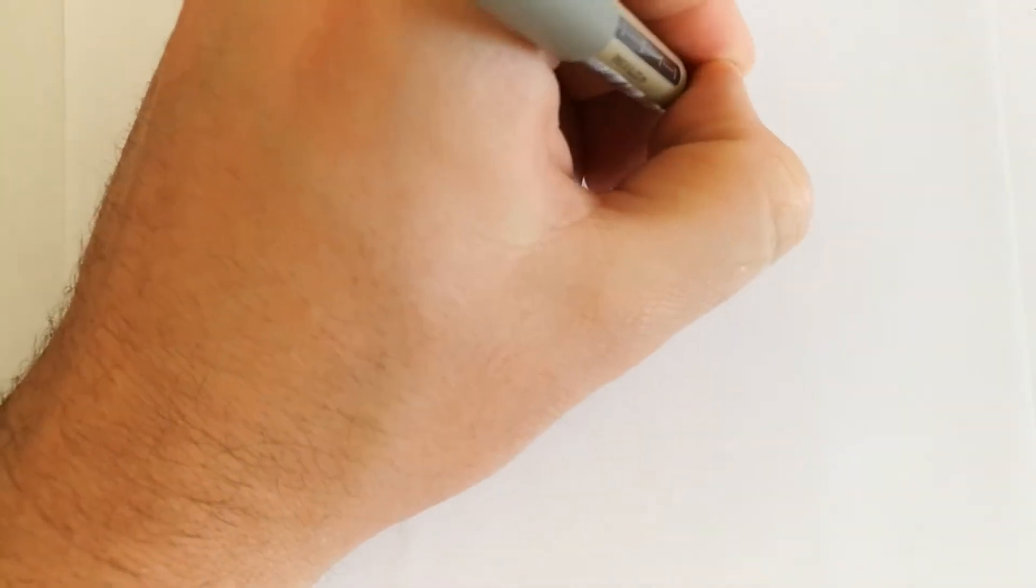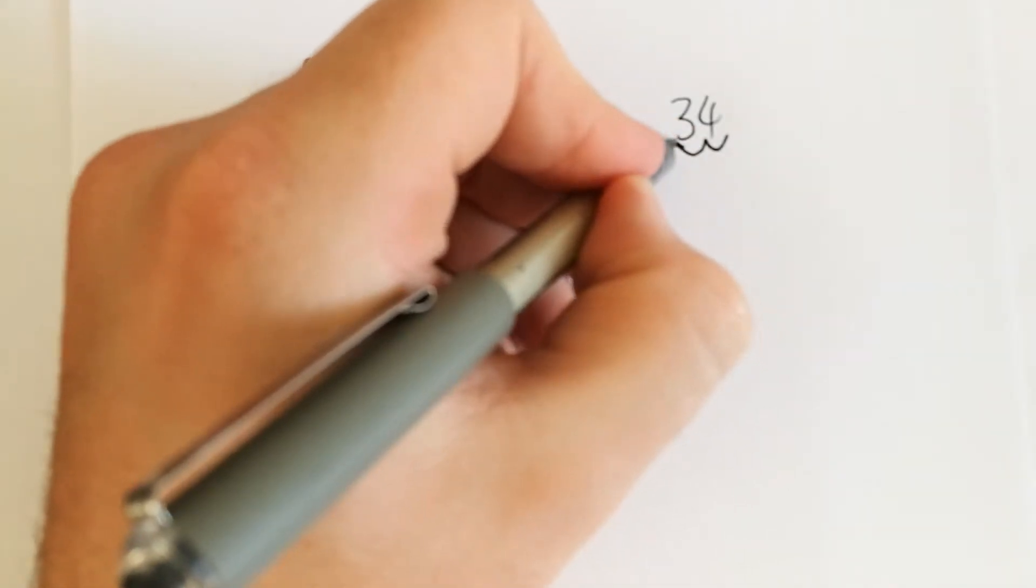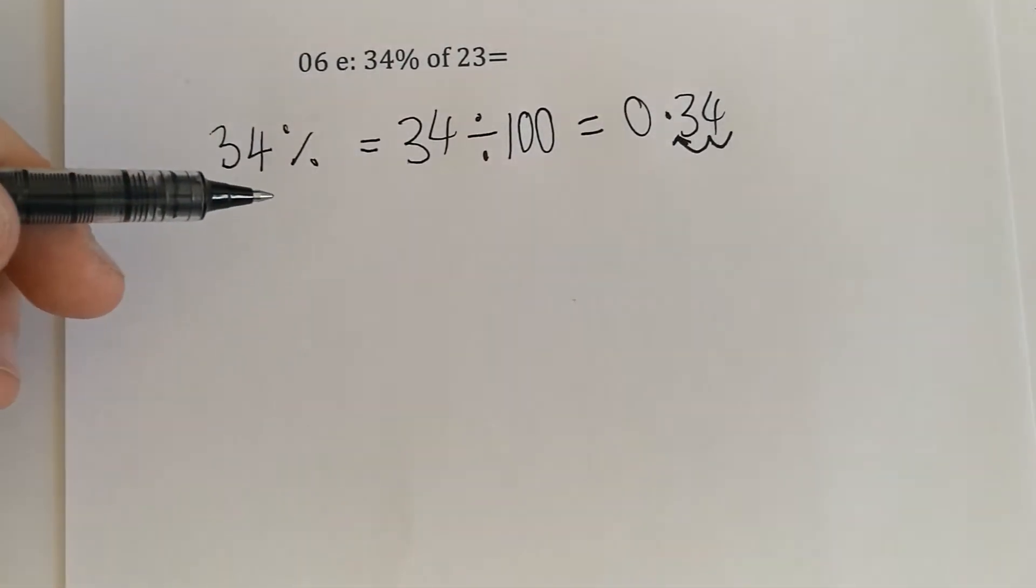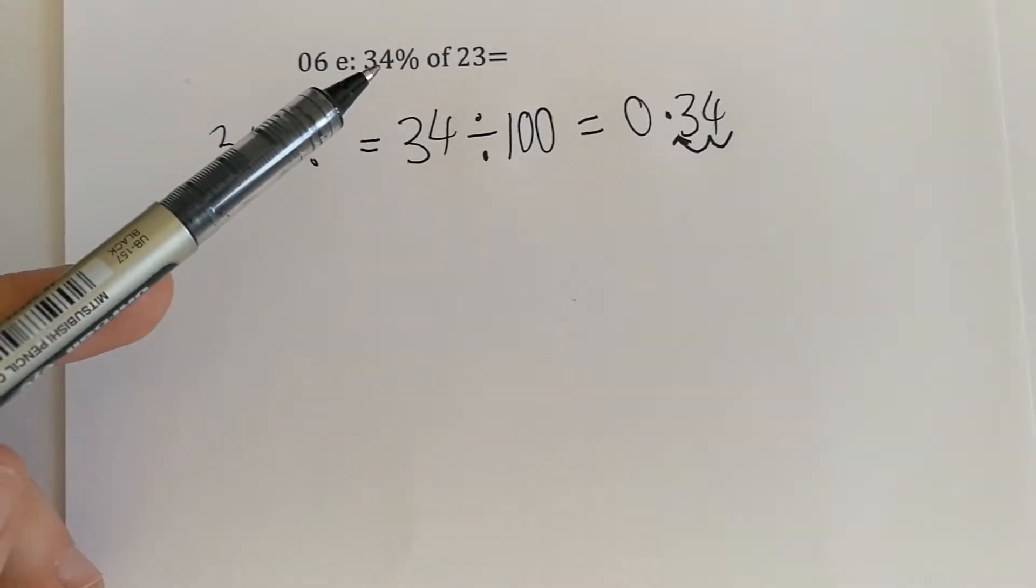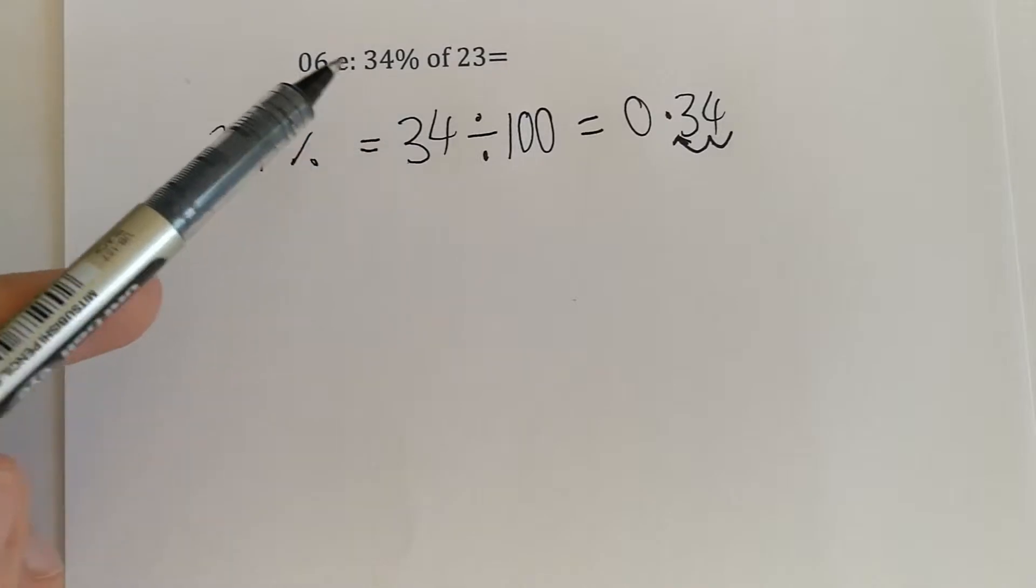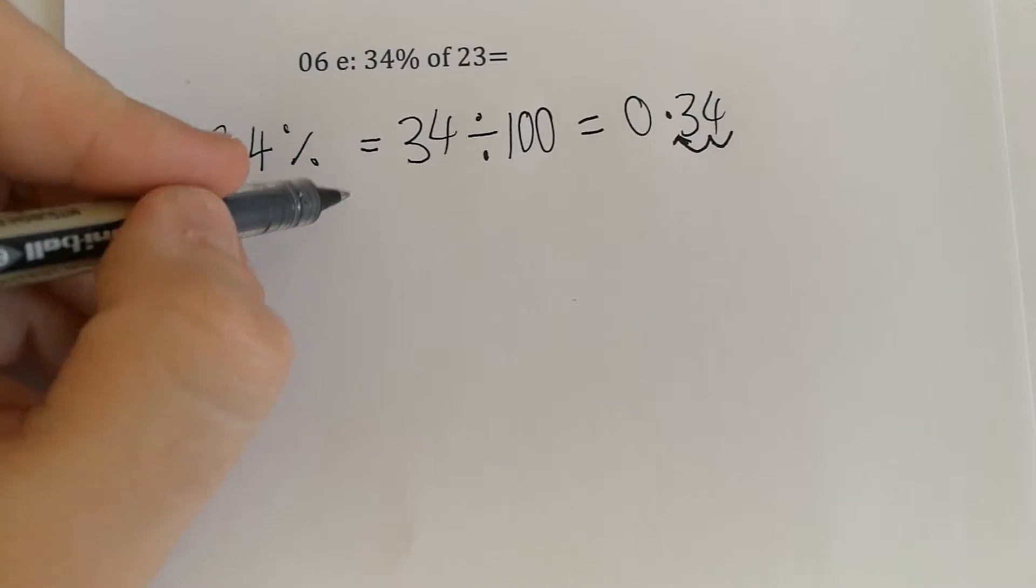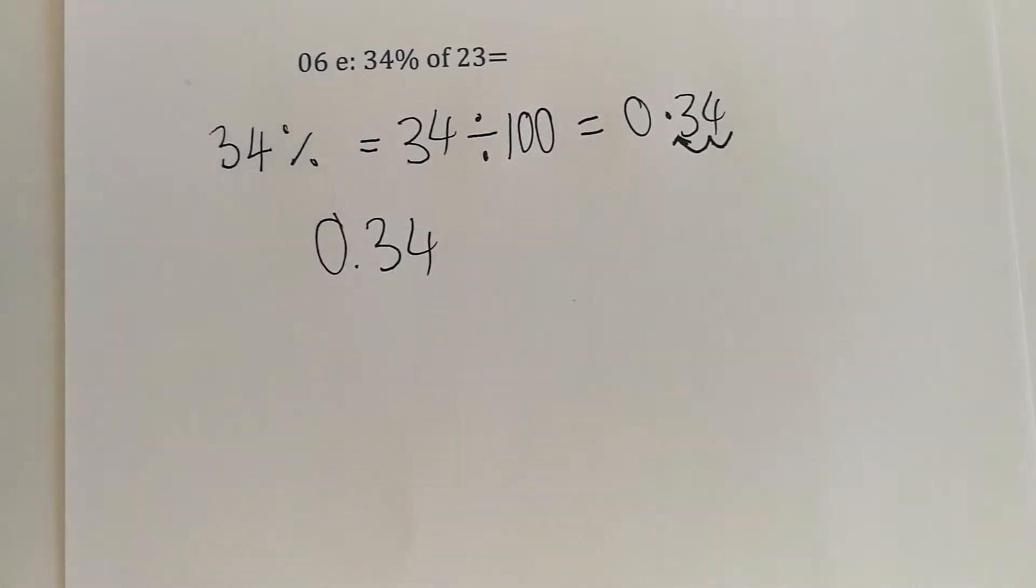We have 34, and then we move the decimal point once, twice. So 34% as a decimal is 0.34. That's always our first step—turn it into a decimal. Now we have 0.34 as our percentage, and the word 'of' just means times.